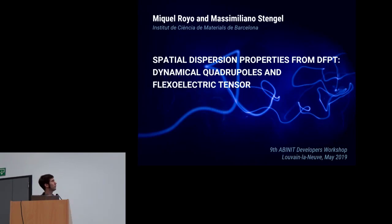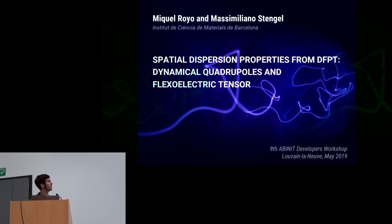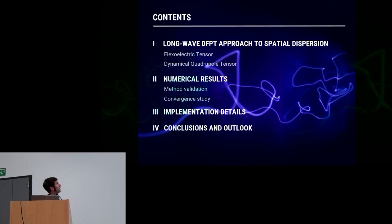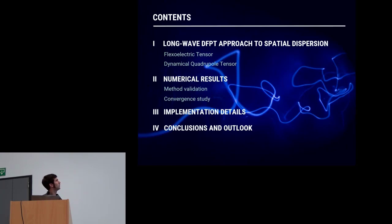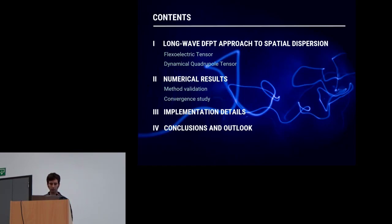In this presentation, I will show you how the method that Max has introduced can be applied for the specific study of two spatial dispersion properties: the dynamical quadrupoles and the flexoelectric tensor. I will briefly introduce what these tensors are and how we calculate them with the long-wave density functional perturbation theory approach, then show numerical results, implementation details in the Abinit software, and finally the conclusions and outlook.